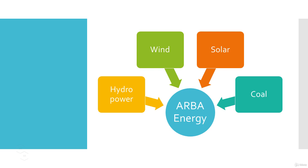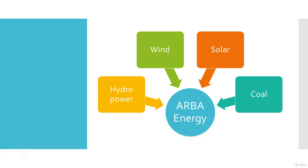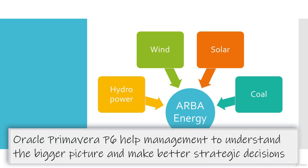Primavera P6 can handle many thousands of projects. We can use its analytical capabilities to get information on all projects and perform analysis across the enterprise as needed. This allows executive management to understand their business from a broader perspective, take action on that information, and prioritize project tasks or resources whenever needed. Primavera P6 is designed to help organizations manage their projects in a logical and consistent way, make better and intelligent decisions, and allow management to focus on the best strategies possible.